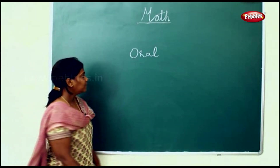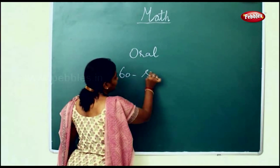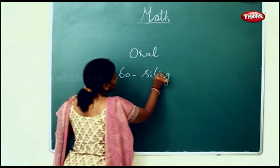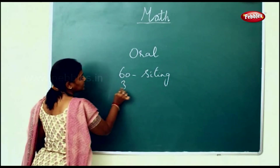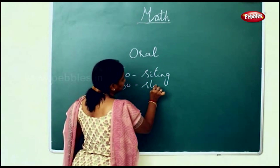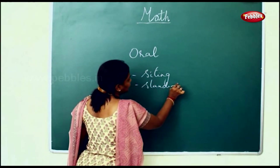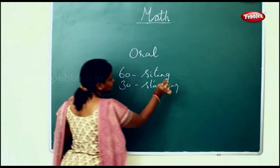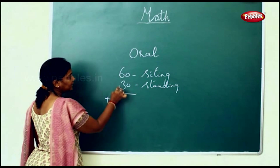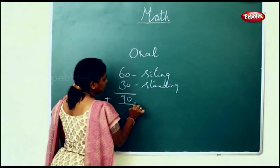In a bus, 60 passengers are sitting and 30 are standing. We have to find the total number of passengers in the bus. So total, we will add: 60 add 30 will be 90.